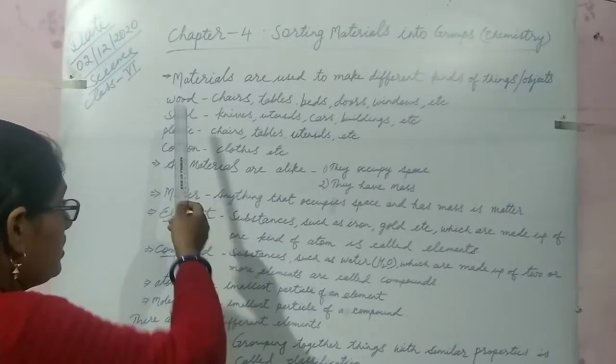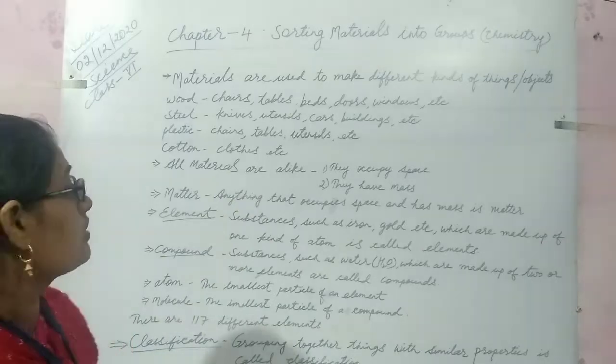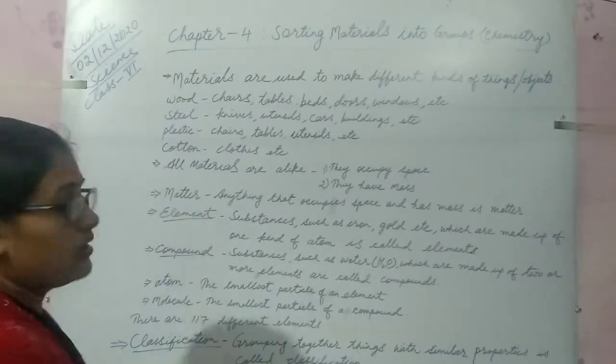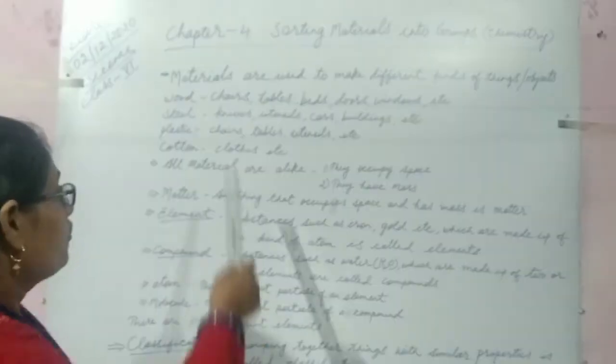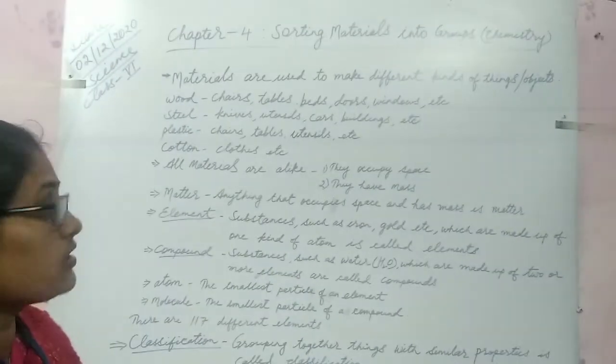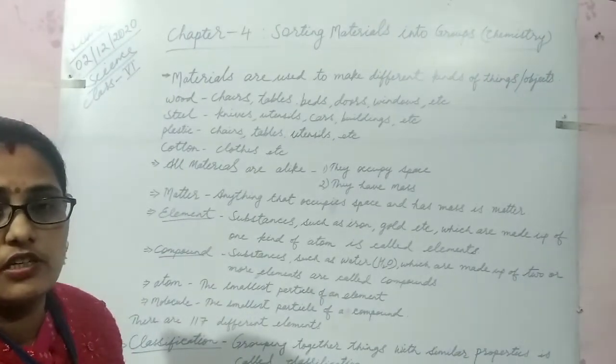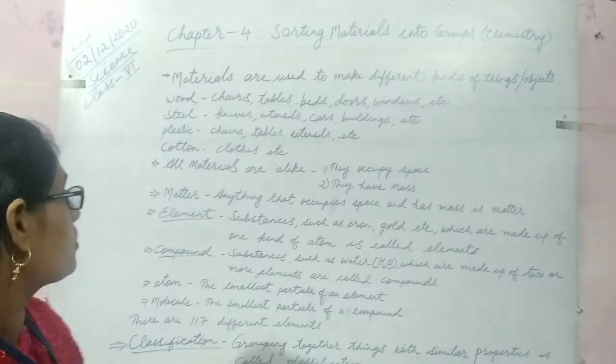Now steel. Steel is used to make knives, utensils, cars, buildings etc. Plastic is also a type of material which is used for making chairs, tables, utensils, toys etc. Cotton. Cotton is also a material which is used to make clothes which we wear.